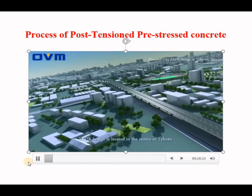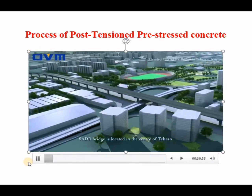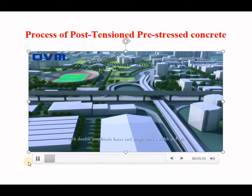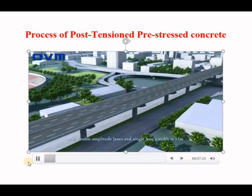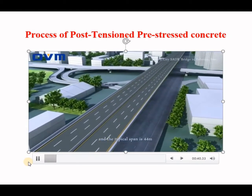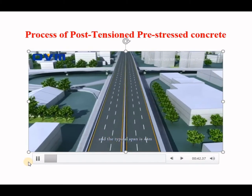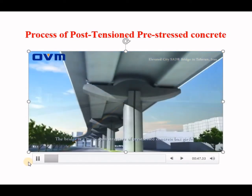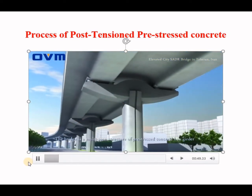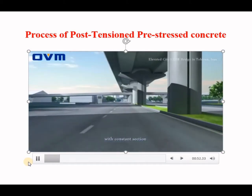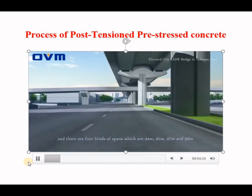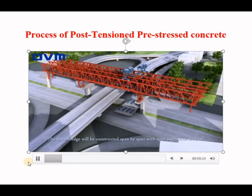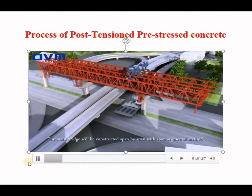This bridge is located in the center of Tehran. The total length of the main bridge is 6 kilometers, with double amplitude lanes and a single lane width of 11 meters. The typical span is 44 meters. The bridge is a multi-span structure of pre-stressed concrete box girder with constant section, and there are four kinds of spans: 44 meters, 41 meters, 47 meters, and 50 meters. The main bridge will be constructed span by span using the span segmental method.